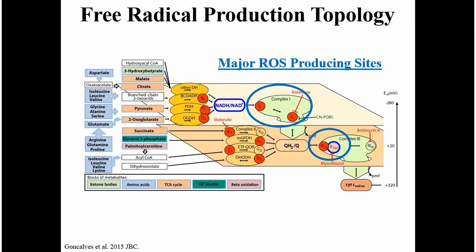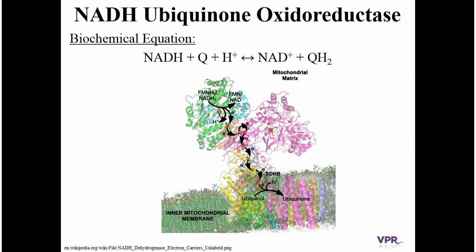In this video, I'm going to go over a paper that does just that, where we look at the mechanisms of ROS production in Complex 1. What we have here is a ribbon diagram of Complex 1 embedded in a lipid membrane. Complex 1 is also known as NADH-ubiquinone oxidoreductase, and the biochemical equation that this enzyme catalyzes is shown above. This enzyme oxidizes NADH, taking those electrons to reduce quinone to form ubiquinol, which can then go on to participate further in the electron transport chain.